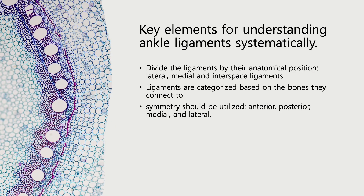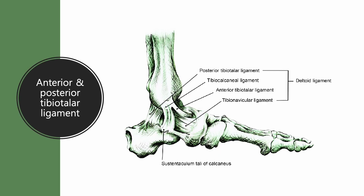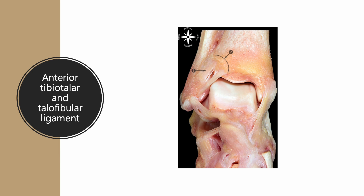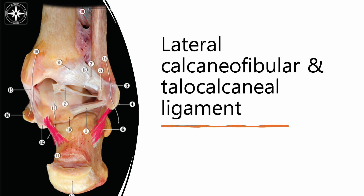Third, symmetry should be utilized: anterior, posterior, medial, and lateral. For instance, the anterior and posterior relation relates to the anterior and posterior inferior tibiofibular ligament, the anterior and posterior tibiotalar ligament, and the anterior and posterior talofibular ligament. By changing fibula to tibia, you catch symmetric relationships, such as changing the anterior talofibular ligament to the anterior tibiotalar ligament, the posterior talofibular ligament to the posterior tibiotalar ligament, and the lateral calcaneofibular ligament to a talocalcaneal ligament. These methods help streamline the study of ankle ligaments and improve recall and understanding of their functions with ankle disorders.